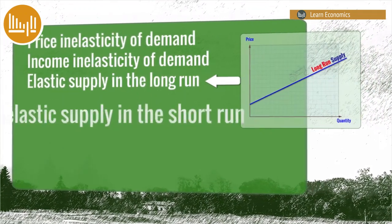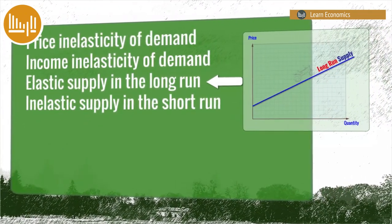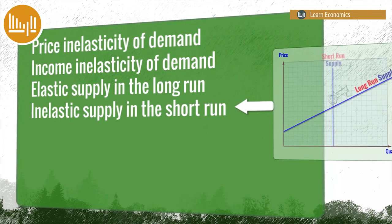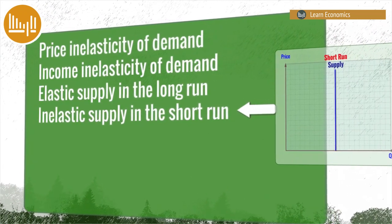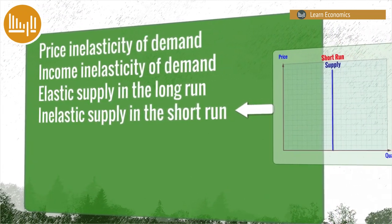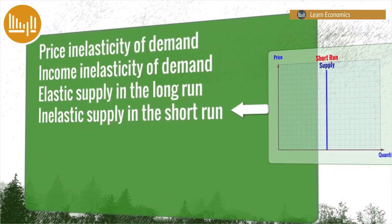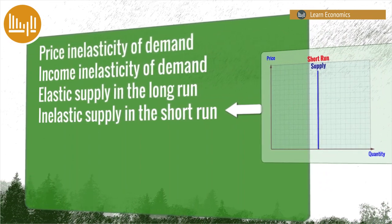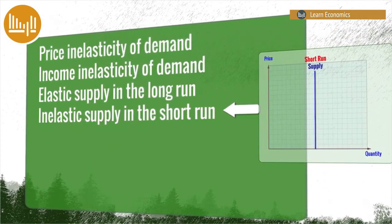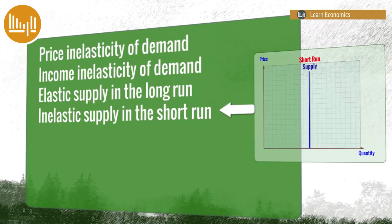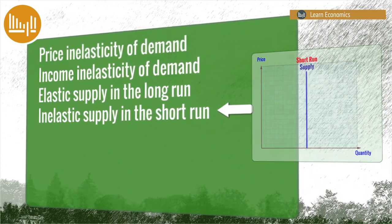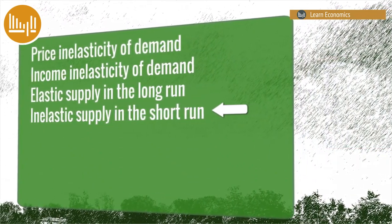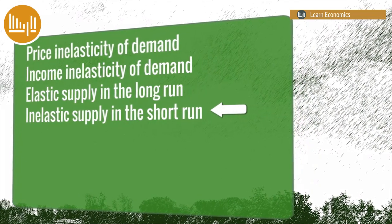In contrast, short-run supply is perfectly inelastic, meaning that it is unresponsive to changes in market price. This is because crops and livestock have growing and breeding seasons, and once the season is underway, supply cannot easily be changed. Hence, changes in market price only affect planning decisions for the future.